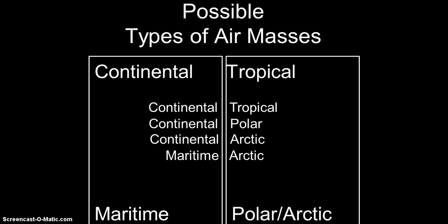We also have maritime arctic — an air mass originating over a cold arctic water area, like a cold ocean or cold lake. We could have a maritime polar air mass, very similar to arctic, and a maritime tropical — originating over water in a warm water area. So you can see how we just pull either continental or maritime, and tropical, polar, or arctic, and put those together to create these different types of air masses.